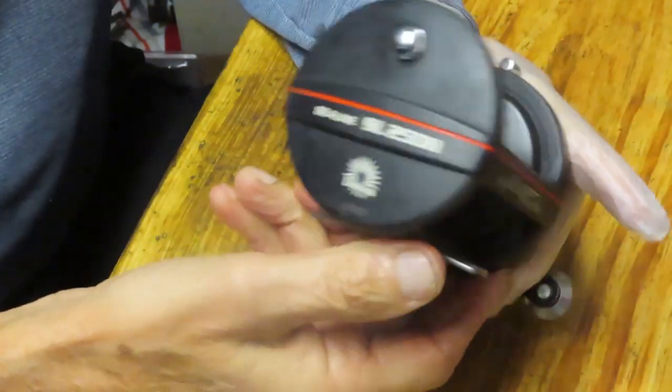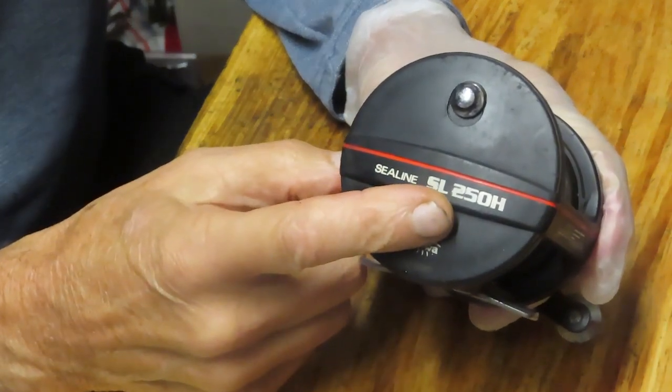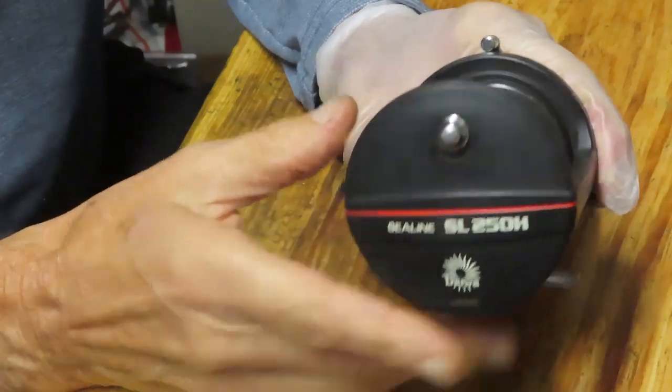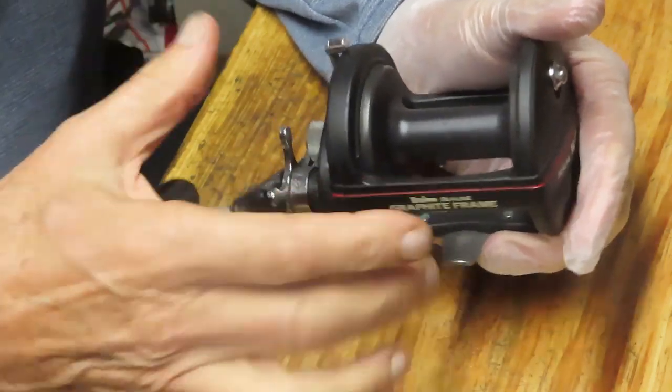We just did a Daiwa Sea Line. Here's another one. This is the Sea Line SL250H. This was the follow-on reel to the 50H. It's got a wide carriage, aluminum frame.